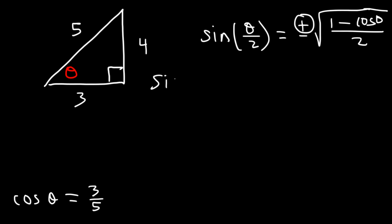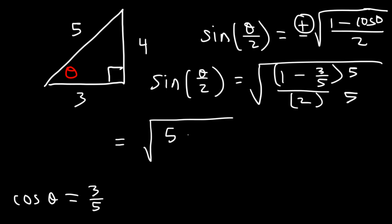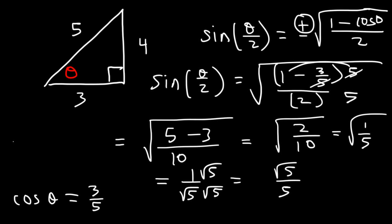Now we can find sine(θ/2): it equals the square root of (1 minus 3/5) divided by 2. Multiplying top and bottom by 5 gives (5 minus 3) over 10, which is 2/10, reducing to 1/5. So we have the square root of 1 over the square root of 5. Rationalizing gives root 5 over 5.